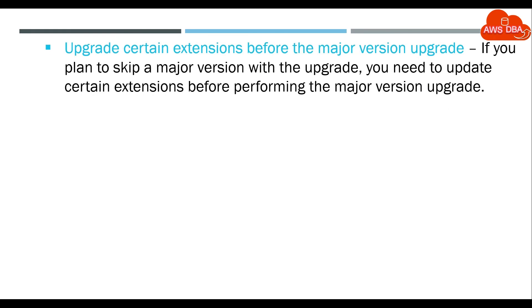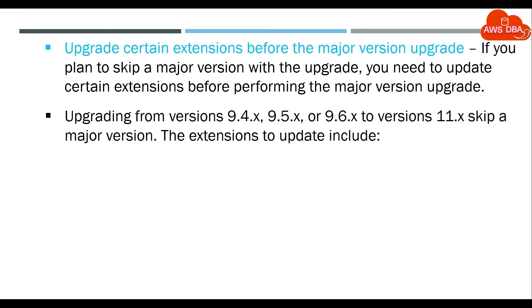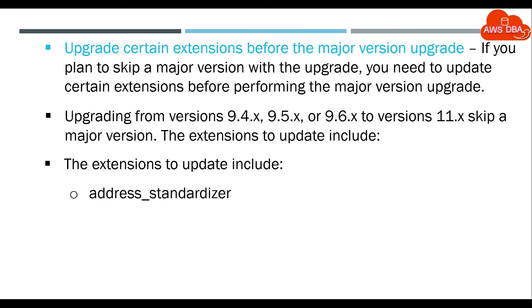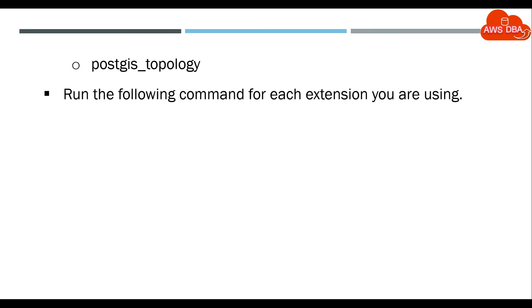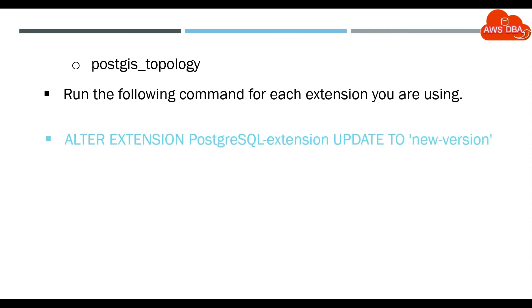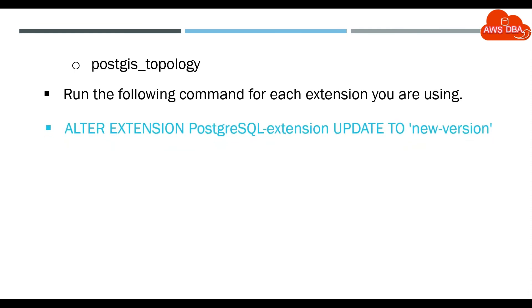Upgrade certain extensions before the major version upgrade. If you plan to skip a major version with the upgrade, you need to update certain extensions before performing the major version upgrade. Upgrading from versions 9.4.x, 9.5.x, or 9.6.x to versions 11.x skips a major version. The extensions to update include: address_standardizer, address_standardizer_data_us, PostGIS, postgis_tiger_geocoder, and postgis_topology. Run the following command for each extension you are using: ALTER EXTENSION extension_name UPDATE TO new_version.